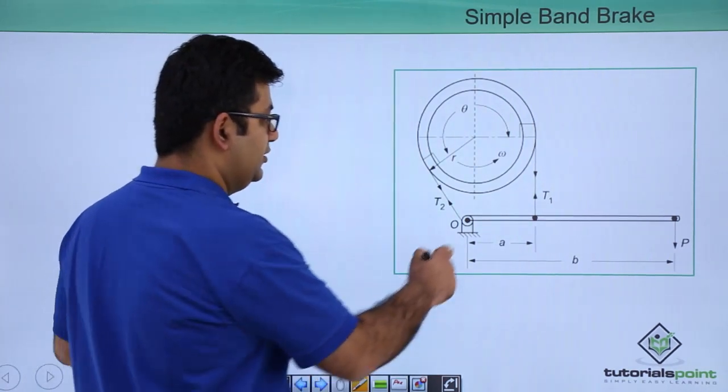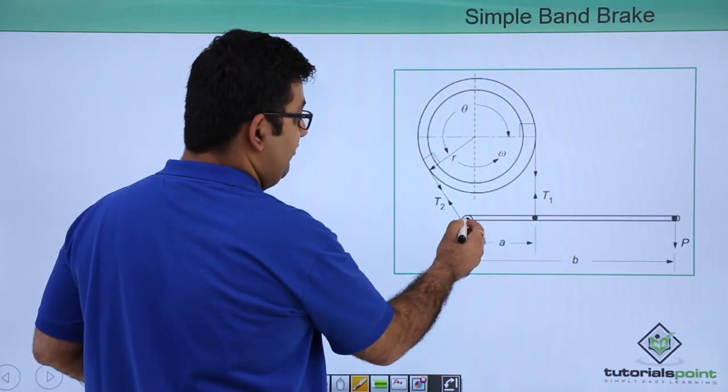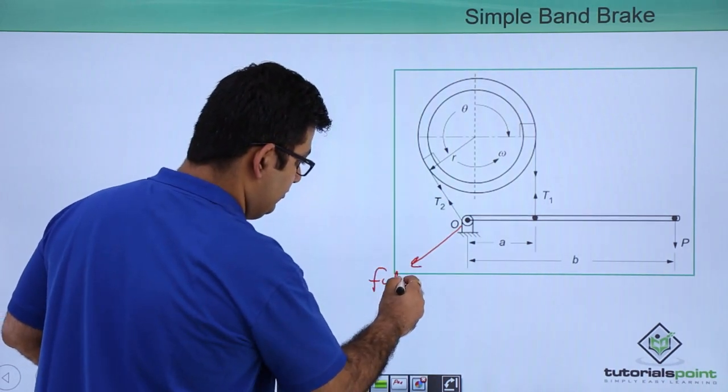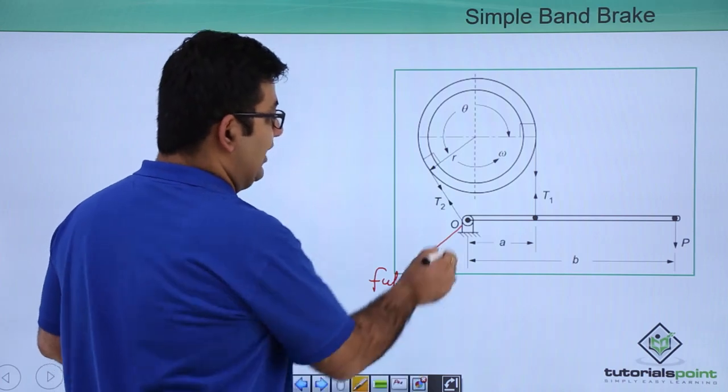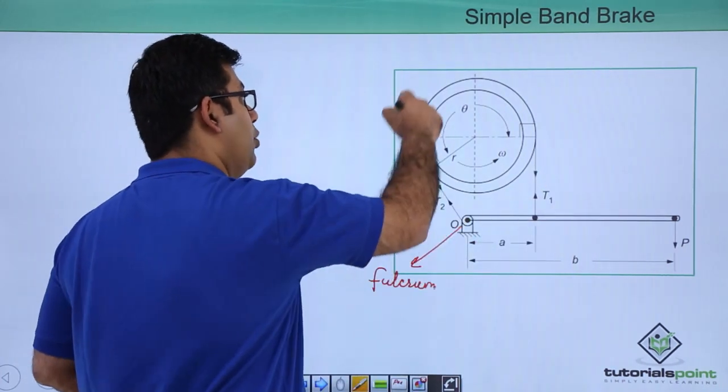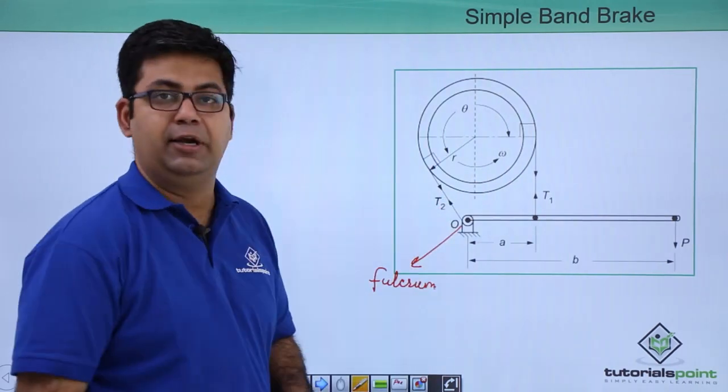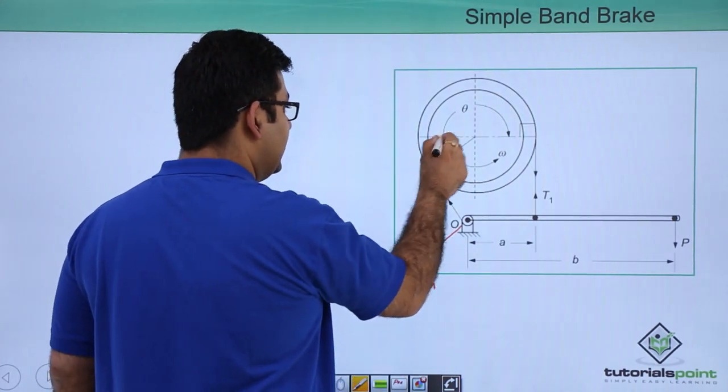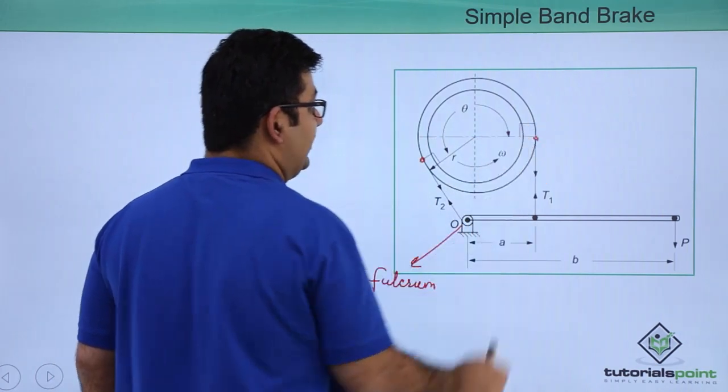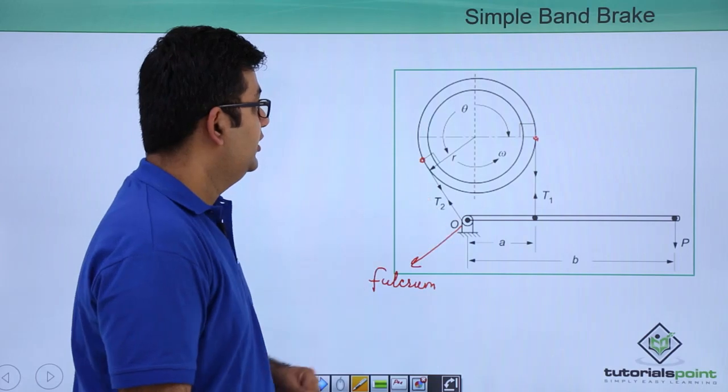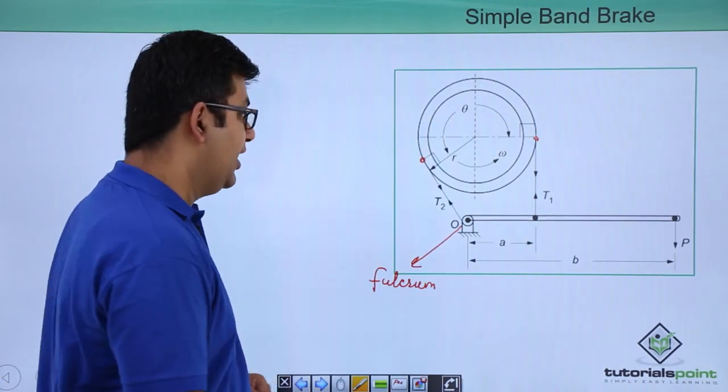You have a lever, this is a fulcrum, and you have these bands which are wound around this drum. And these bands, they exit the drum at 90 degrees to the radius. So this is what the simple band brake looks like.